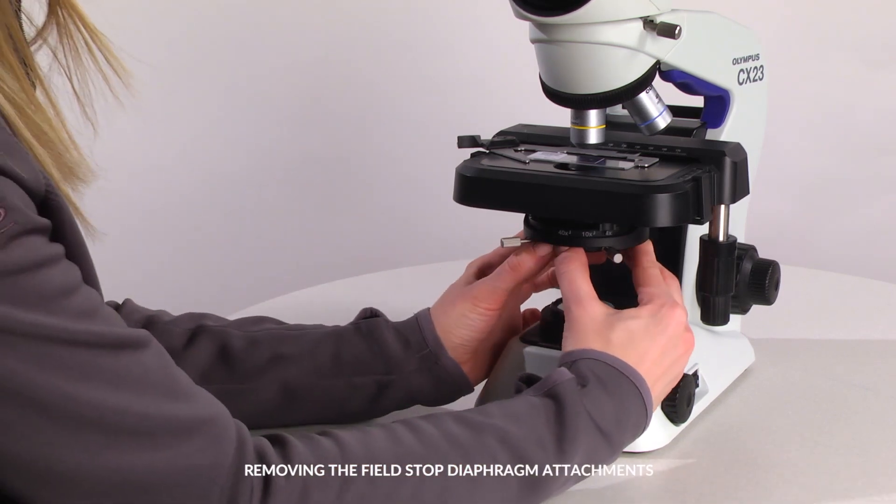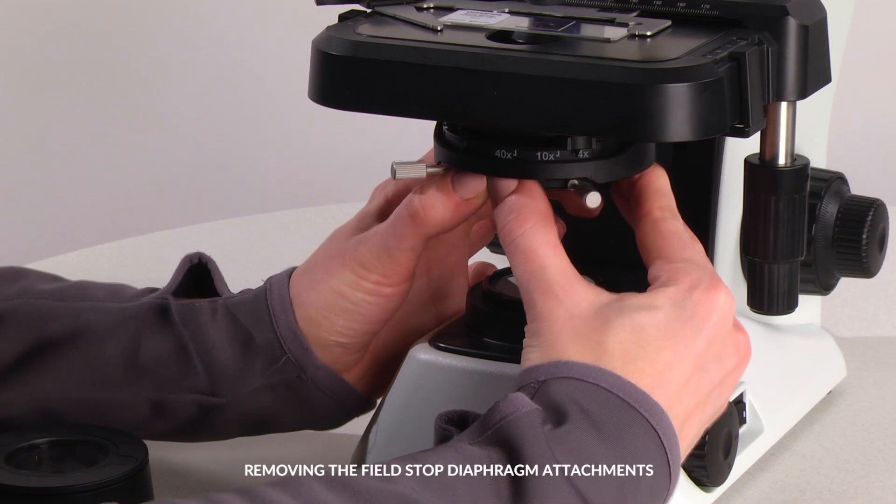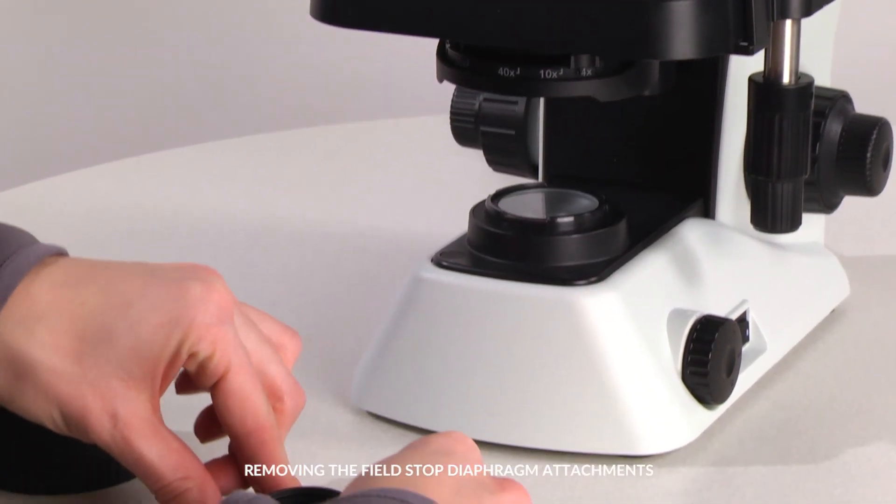To remove the auxiliary unit, gently push down while holding it. Do not press down too hard on the centering knobs as this may cause the auxiliary lens to shift position.